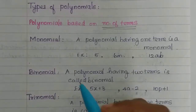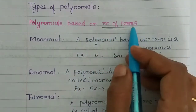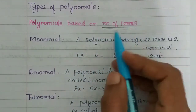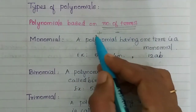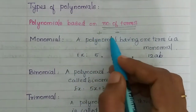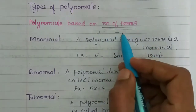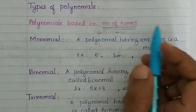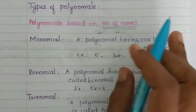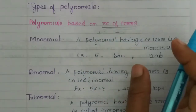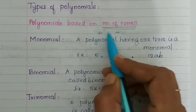Now, first one: polynomials based on number of terms. What do we mean by terms? Plus and minus — that's how we separate terms in an algebraic expression. So, we name this polynomial.